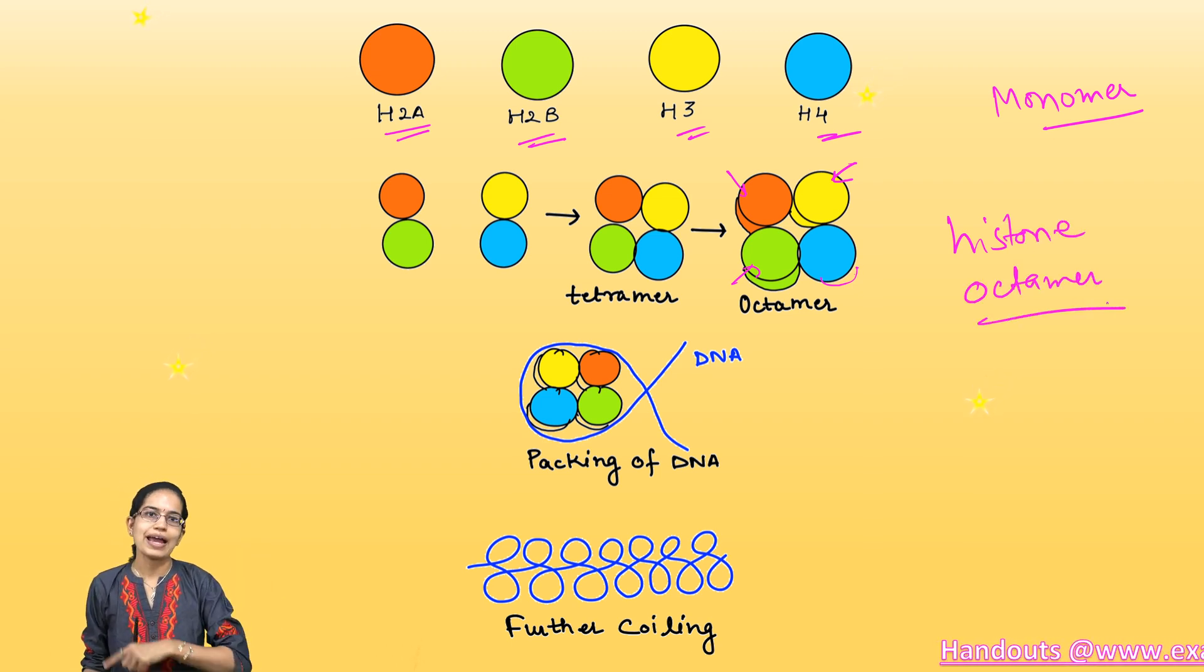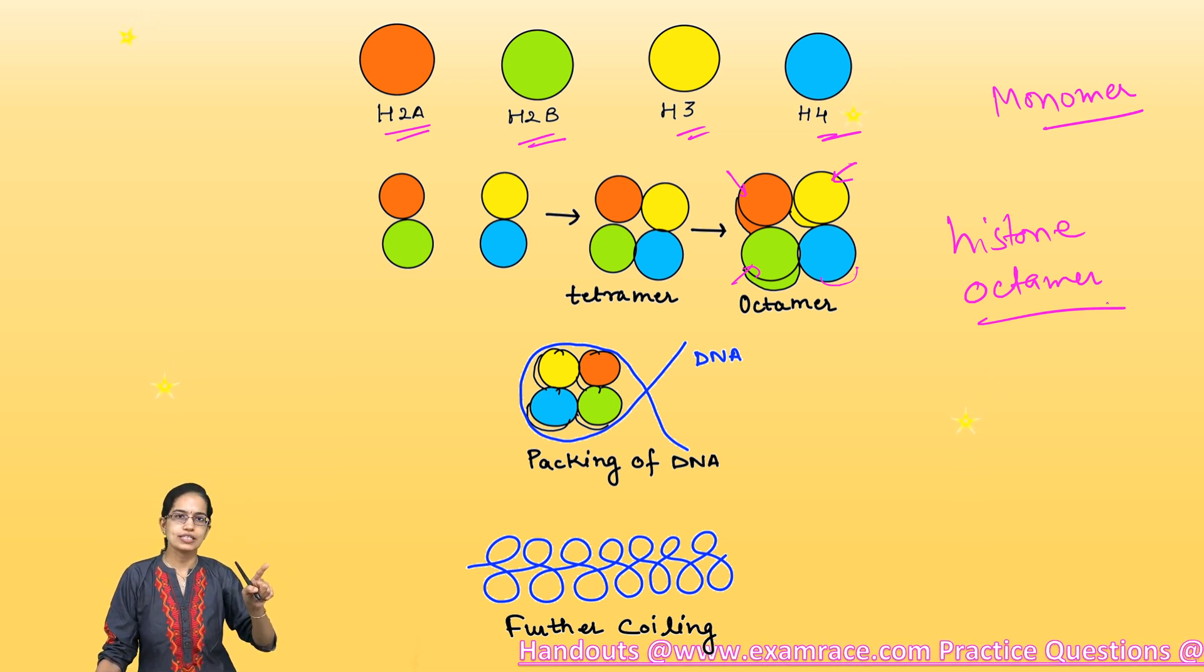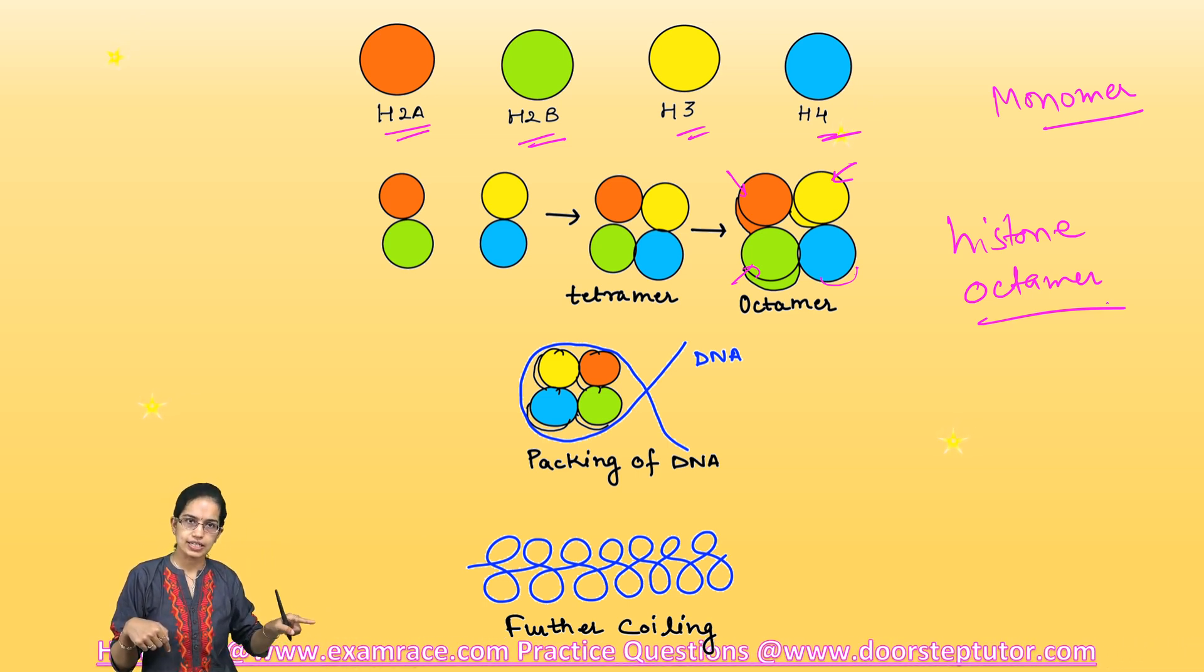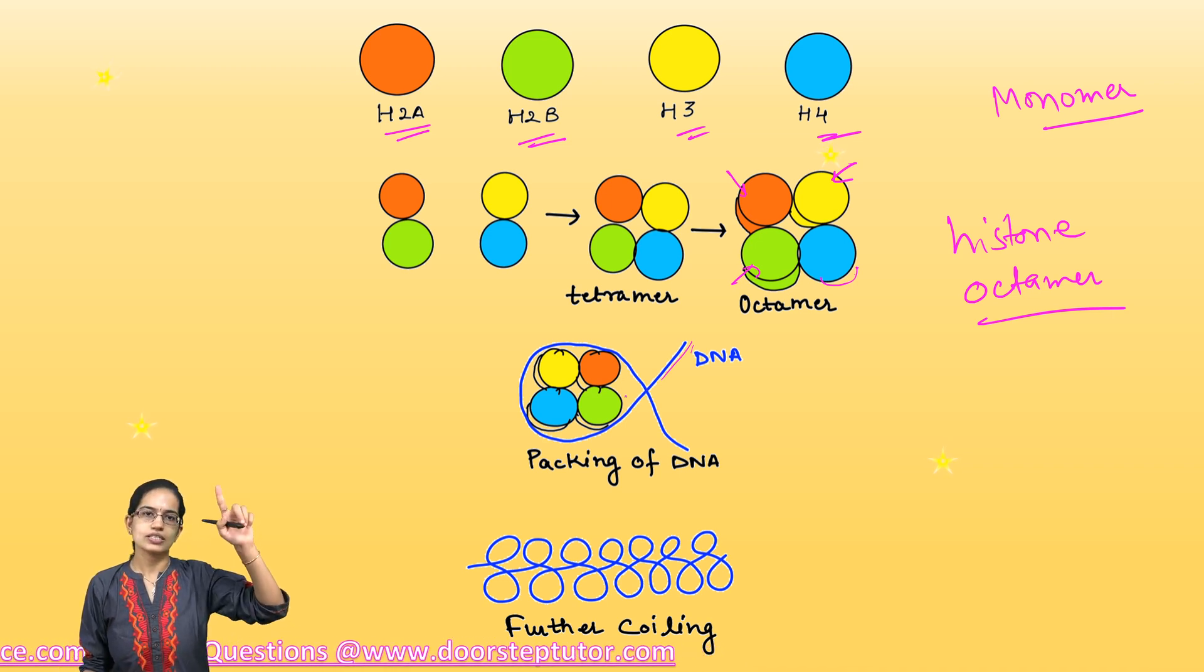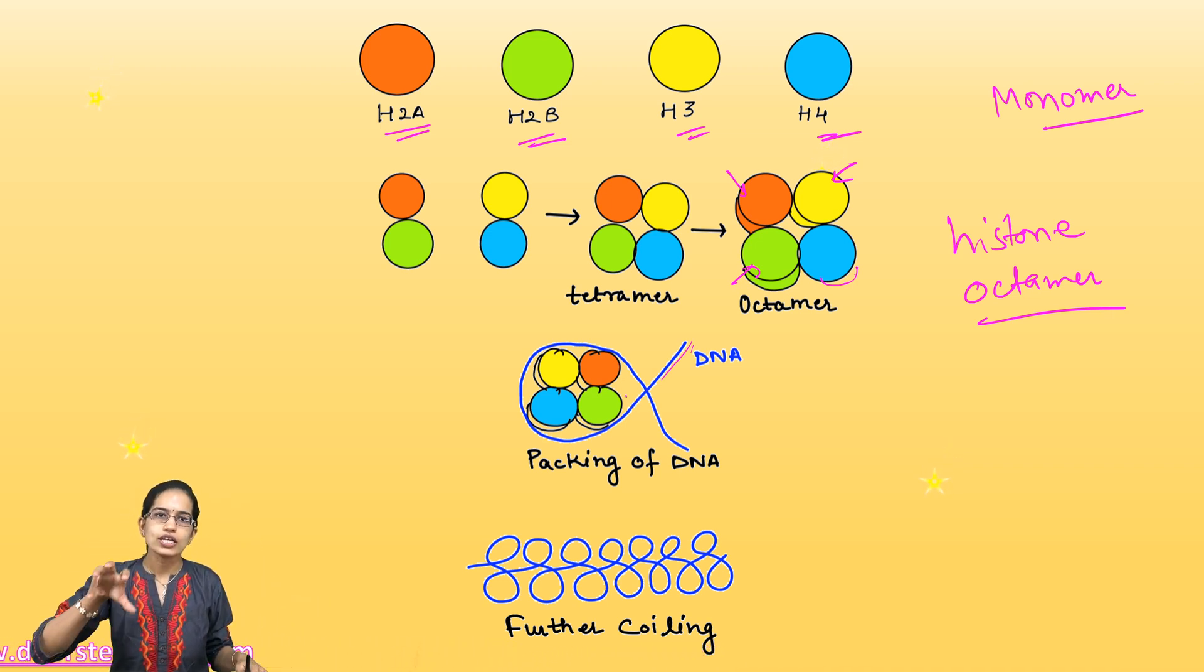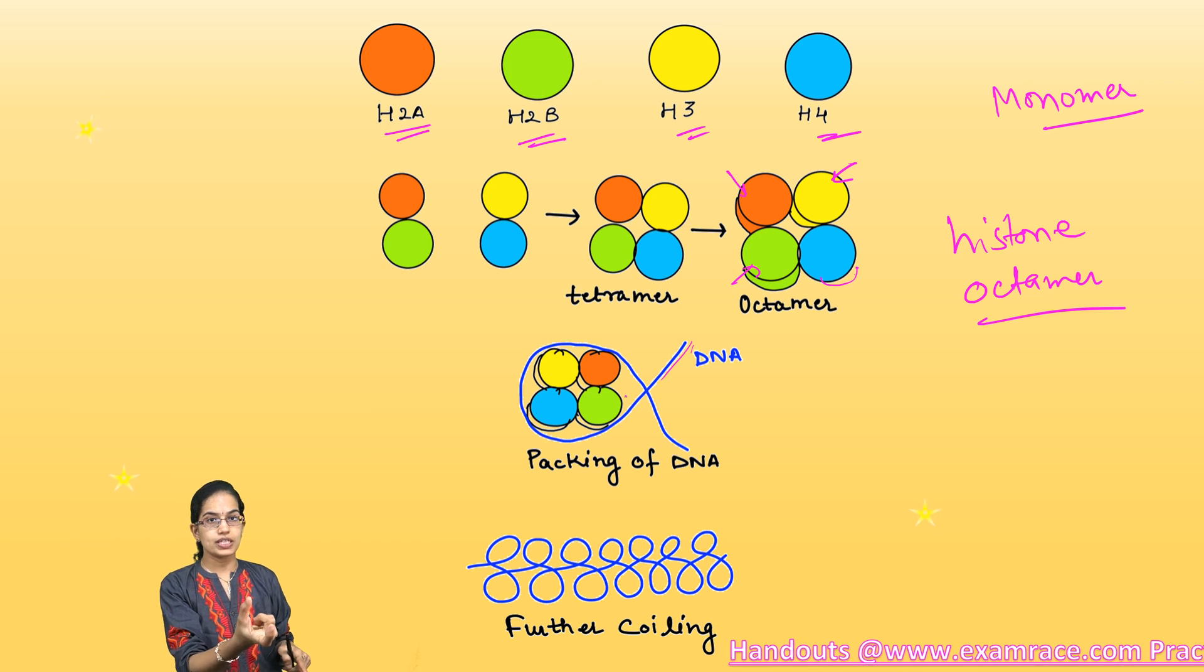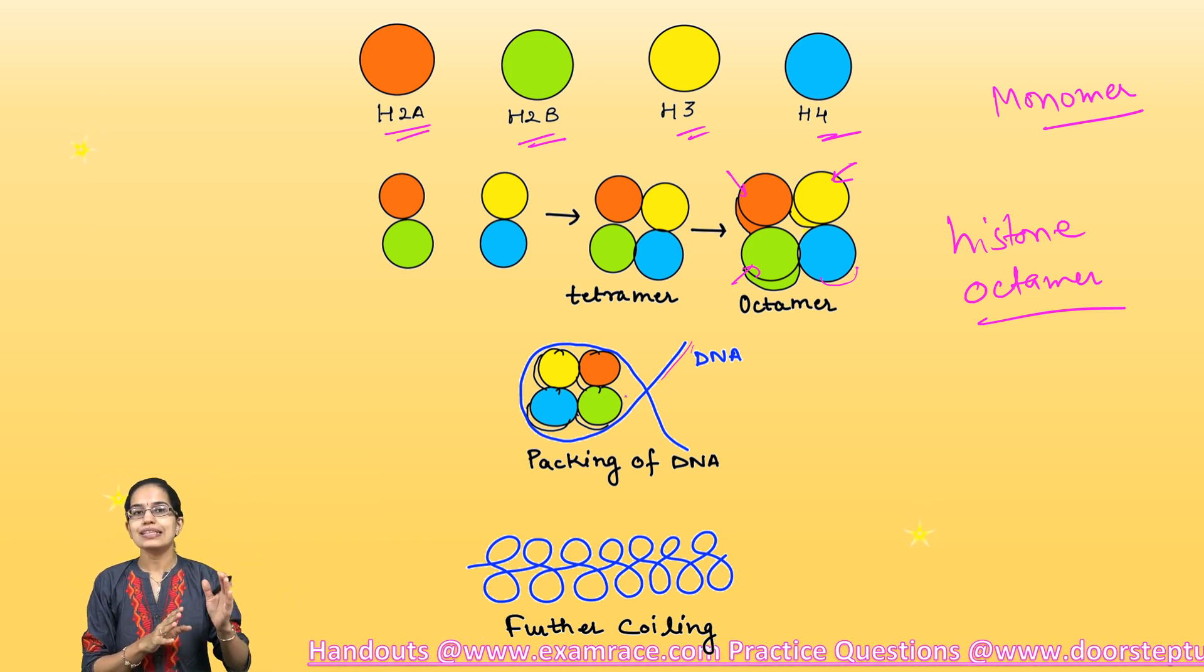This octamer is being surrounded by DNA. When DNA surrounds, it surrounds in this fashion such that on the two edges you have a V shape that is there. This is how you can see the structure, it's similar to a kind of fish structure. All histones being inside and you would have DNA being coiled around it.